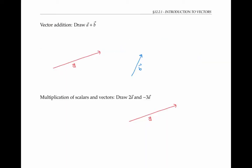Now that we've defined vectors, we can talk about adding them together. If we have a vector a and a vector b, we can define the vector a plus b as follows. First, we move the vectors so that they're end to end — in other words, the terminal point of a coincides with the initial point of b. Then we draw a straight line from the initial point of a to the terminal point of b to complete the triangle. That's our vector a plus b.